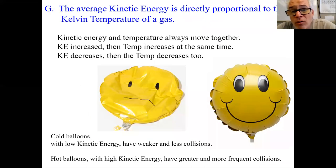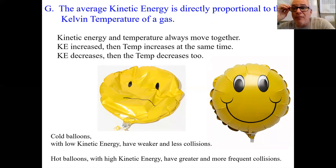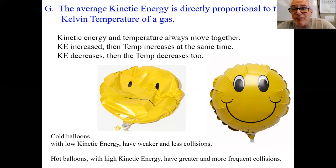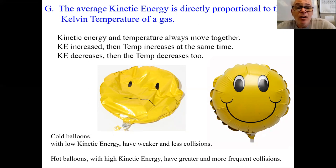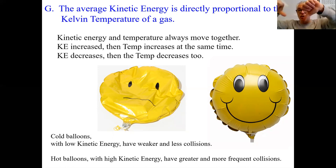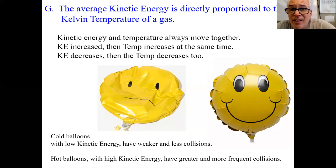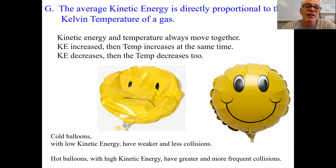Kinetic energy is directly proportional to the Kelvin temperature. We don't use Celsius — we don't use the F-word Fahrenheit. We use Kelvin because there really is a theoretical zero, which means zero kinetic energy. You can't have negative numbers or zero in the denominator of the combined gas law. The hotter it is, the more particles move. Temperature and kinetic energy: directly proportional — and we say Kelvin.